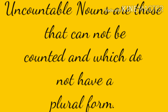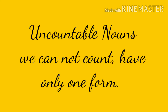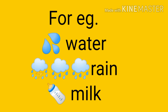Uncountable nouns are those nouns that cannot be counted and which do not have a plural form. Uncountable nouns wo nouns hote hain jinnhe hum apni fingers mein count nahi kar sakte hain — numbers mein jinnhe hum count nahi kar sakte hain. Uncountable nouns: we cannot count and have only one form. Unhe hum numbers mein one, two, three, four count nahi kar sakte hain. Aur unhe hum singular or plural form mein use nahi kar sakte hain.